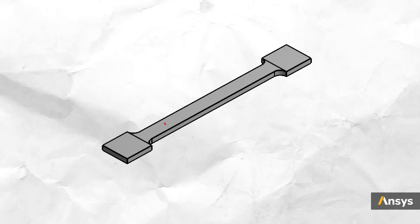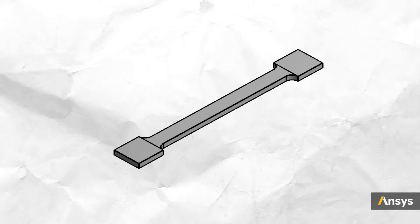In the first example, we start with a simple dog bone sample made of polyethylene material. It is a very common practice to use such samples to perform tensile testing, which is used for calculating material properties. We use this to see how the tensile response starts linear at small deformations and turns nonlinear as the deformation increases. In the second example, we use the same dog bone but replace the material with rubber, and see how material nonlinearity plays a role in making the model nonlinear.